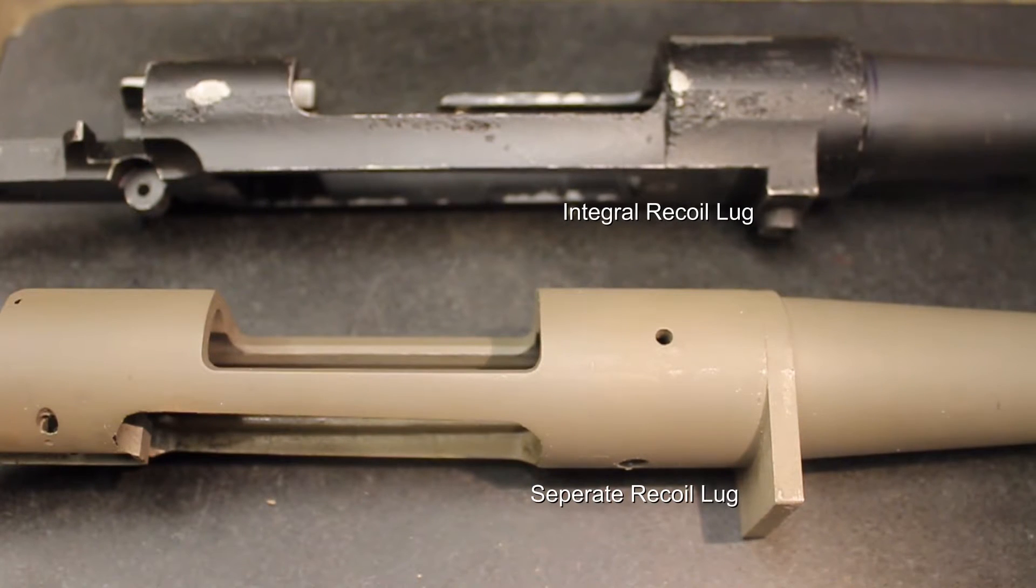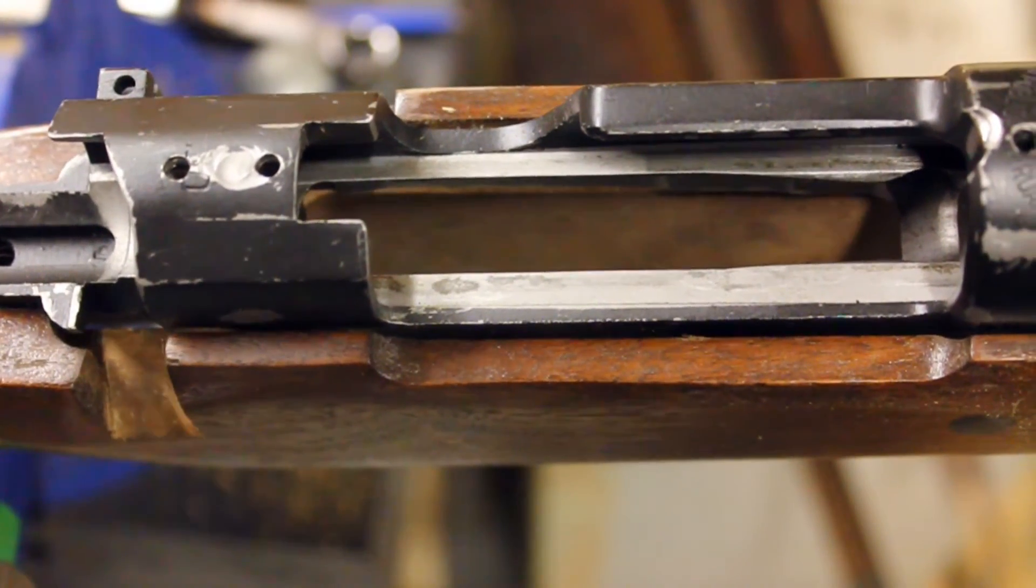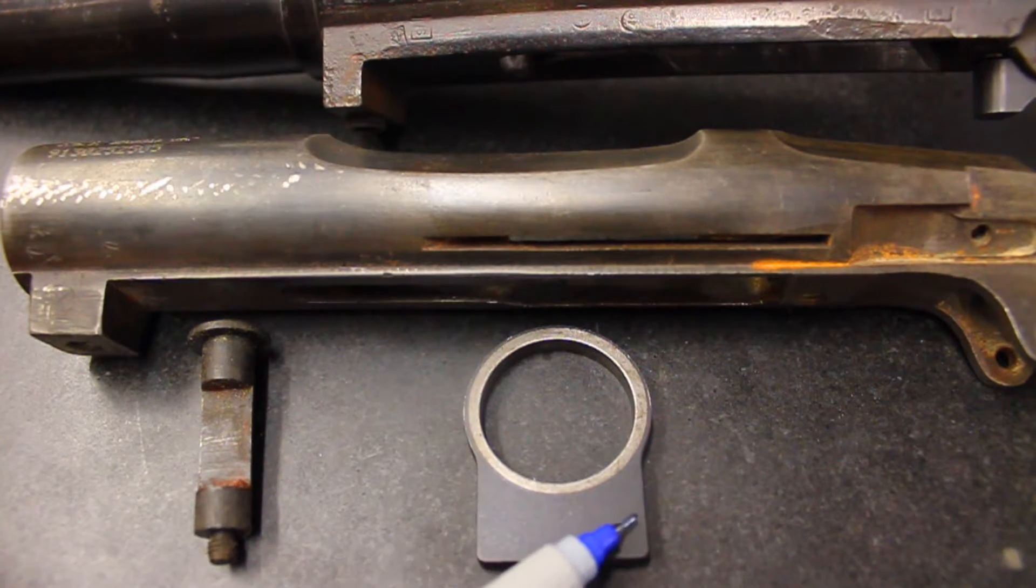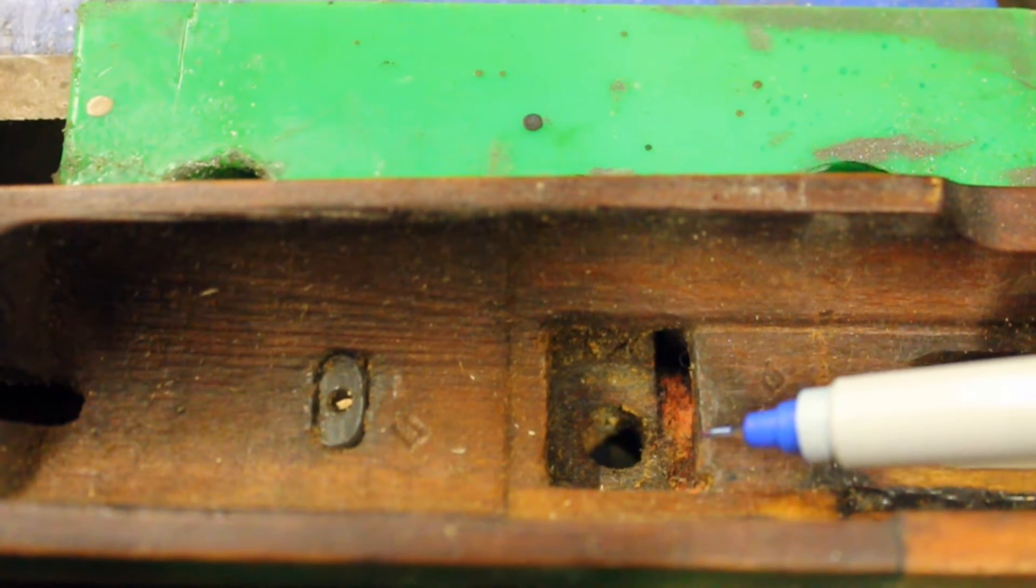Well, the recoil lug protects a bedded action by preventing the action from rubbing against the rifle's bed and wearing away material. It also protects the stock by displacing the load of recoil from just the small action screws to a much broader area that the stock can absorb.